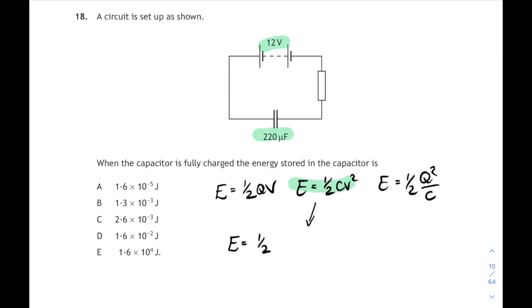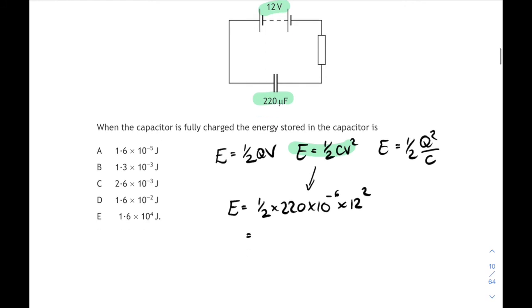That's going to be a half times 220 times 10 to the minus 6 microfarads times 12. Don't forget to square the voltage. If you do that on your calculator you're going to get an answer of 0.01584, rounds to 1.6 times 10 to the minus 2 joules. That's answer D.